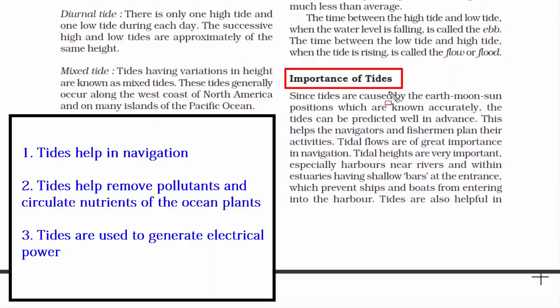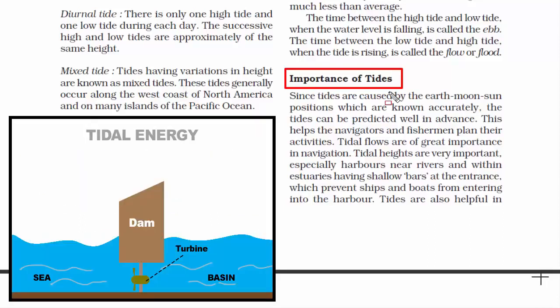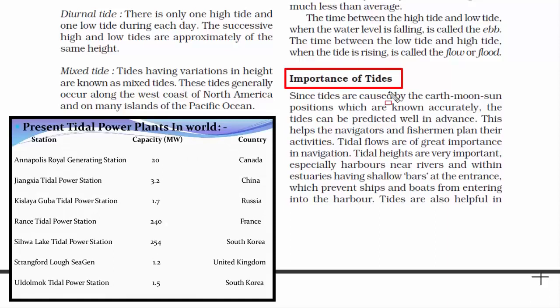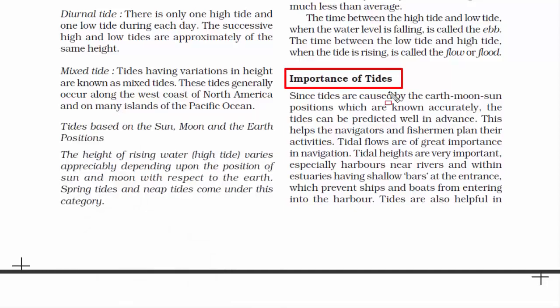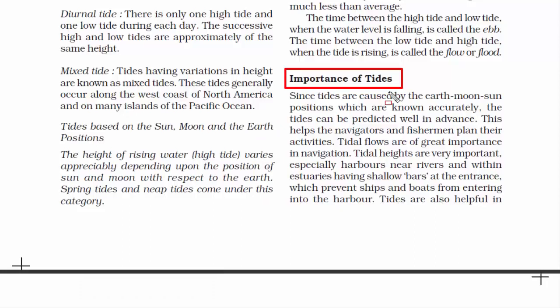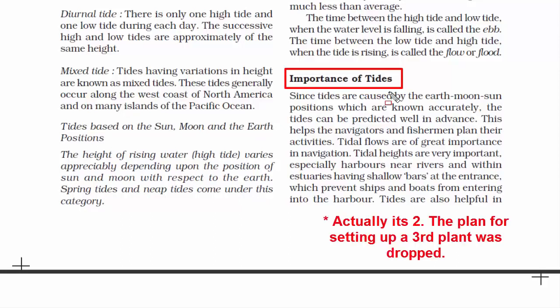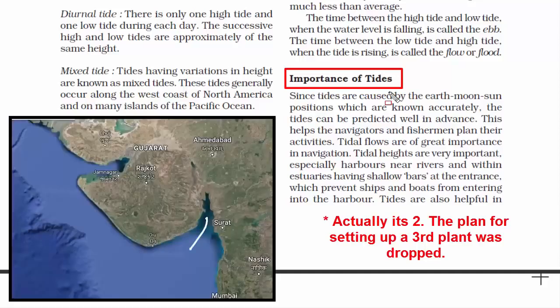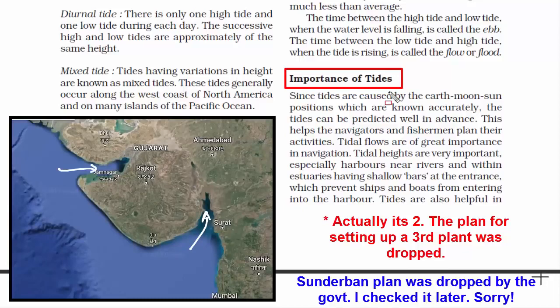The third advantage is that tides are used to generate electrical power — tidal energy, classified as a renewable energy resource. Turbines are placed below the water surface, and water currents move the turbines, which activate a generator that produces electricity. Countries like South Korea, United Kingdom, Canada, France, Russia and China have the world's biggest tidal power plants. India, as a peninsula surrounded by water on three sides, has ample coastline for tidal energy. The three places in India where tidal energy is harnessed are the Gulf of Khambhat, Gulf of Kutch and the Gangetic Delta in Sundarbans.